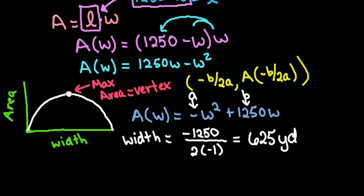So now what we can do is we can find area when the width is 625 yards. Okay, so what we would do is we would plug this in and we would do negative 625 squared. Make sure that you realize that the negative is on the outside because if you put this into your calculator incorrectly it will give you the wrong answer.